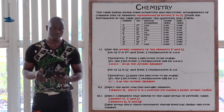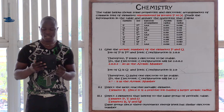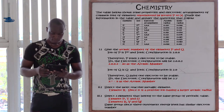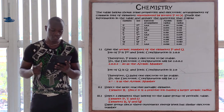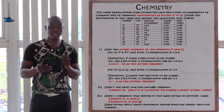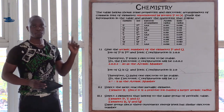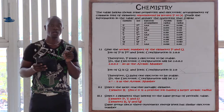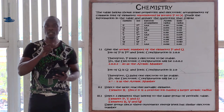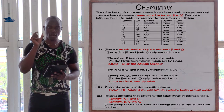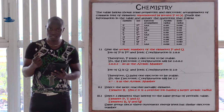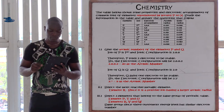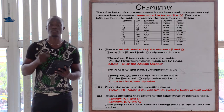Let's look at question number nine. The table shows some physical properties and electronic arrangements of common ions and elements represented by letters P to X. Study the information and answer the questions that follow. The first question is: give the atomic number of elements P and Q. The ion of P is P2+, which means it has lost two electrons. The ionic arrangement is 2,8,8. Since P2+ means it lost two electrons, the original electronic configuration is 2,8,8,2, making element P calcium, which is atomic number 20.